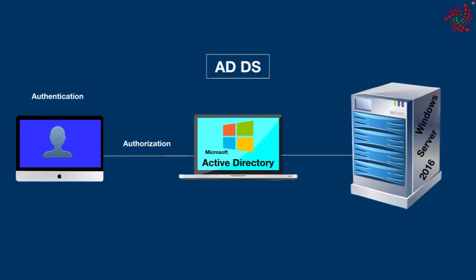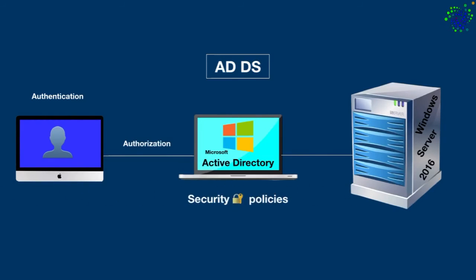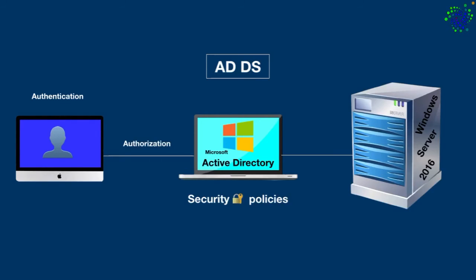Active Directory Domain Services also allows users to access only the data they are allowed to use — that's called authorization. Not only that, it also assigns and enforces security policies that determine which network resources a user can access. The server that runs Active Directory Domain Services is called a domain controller.